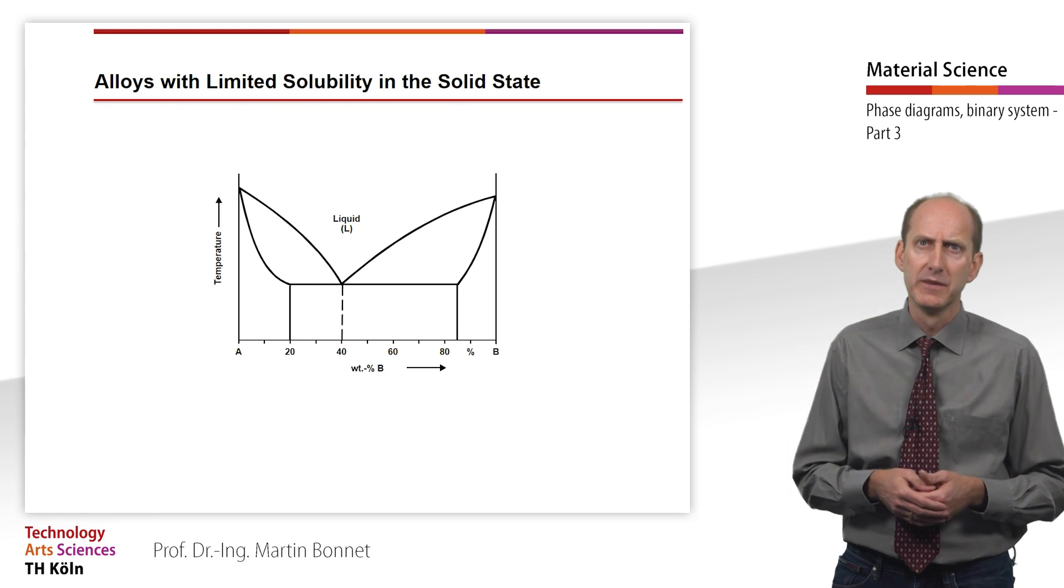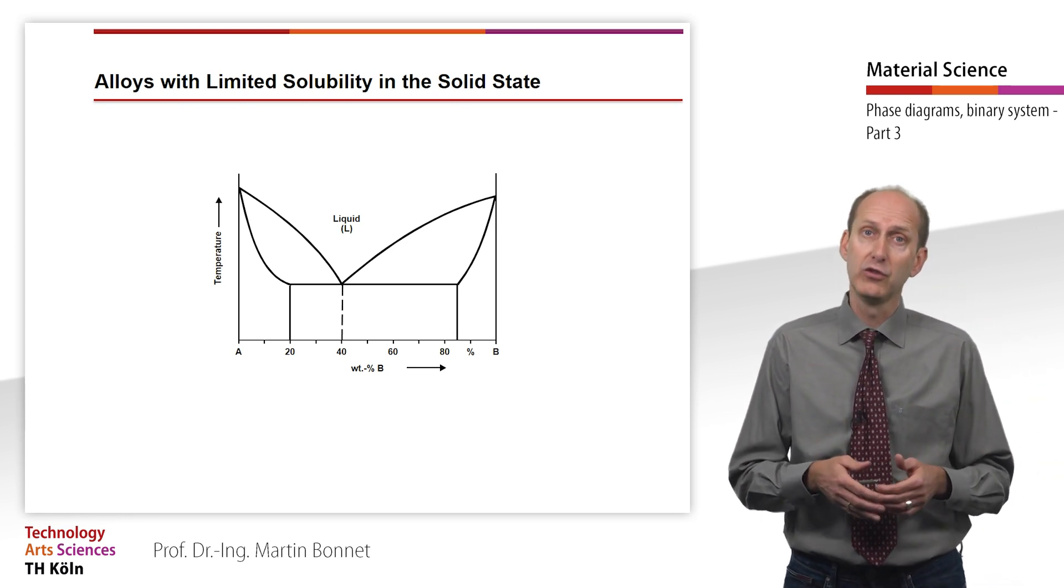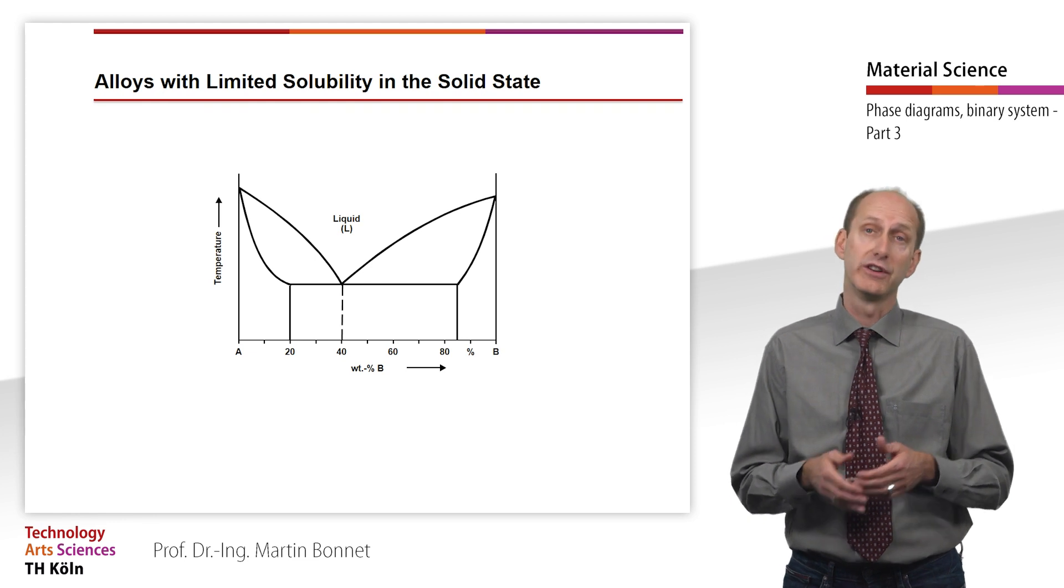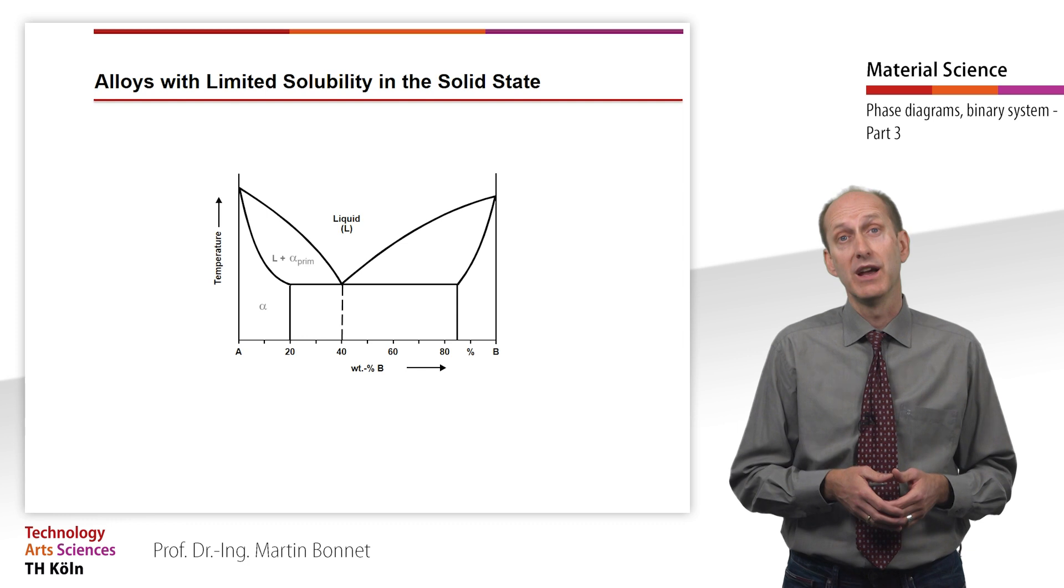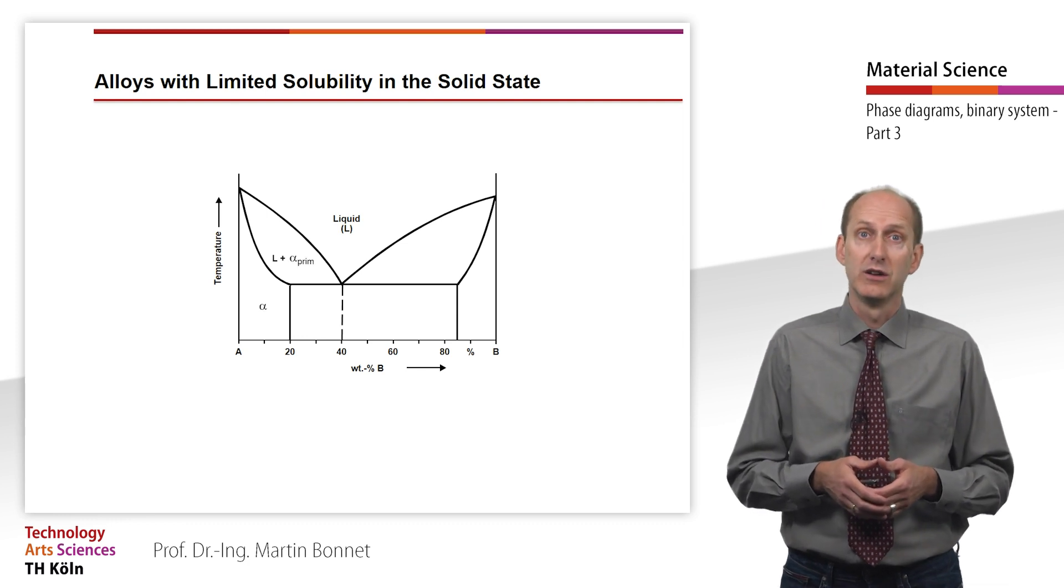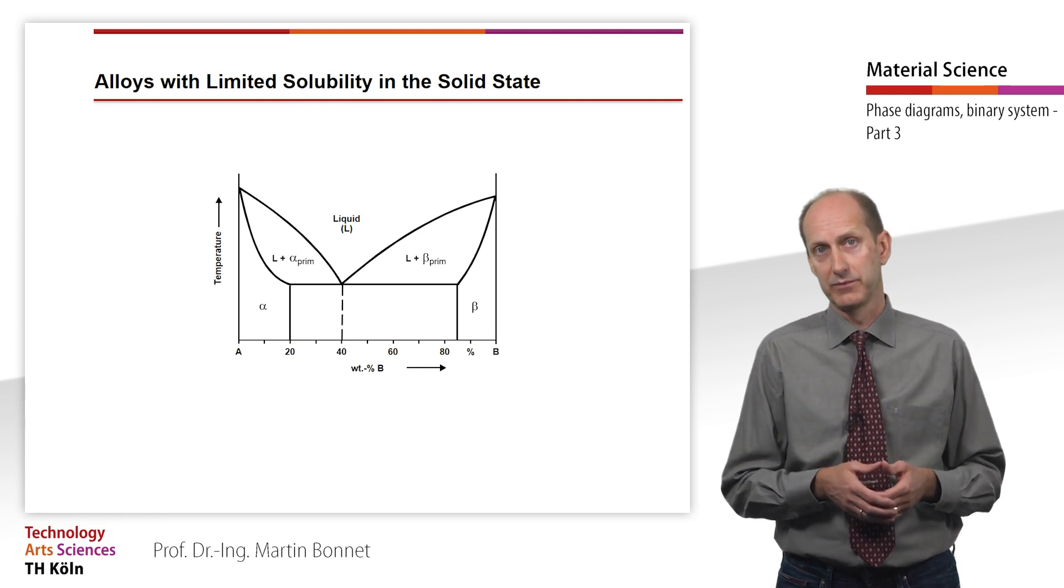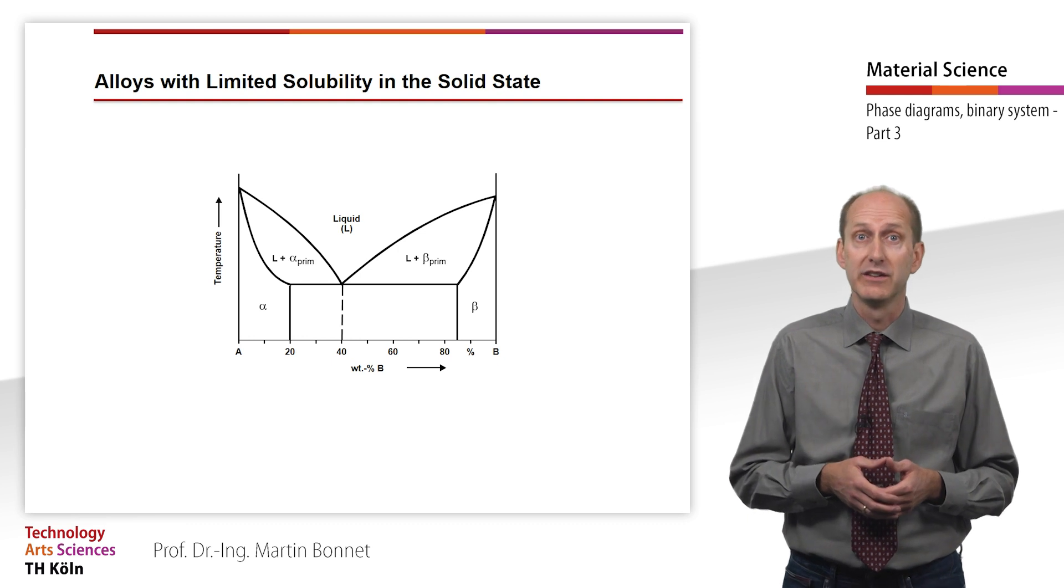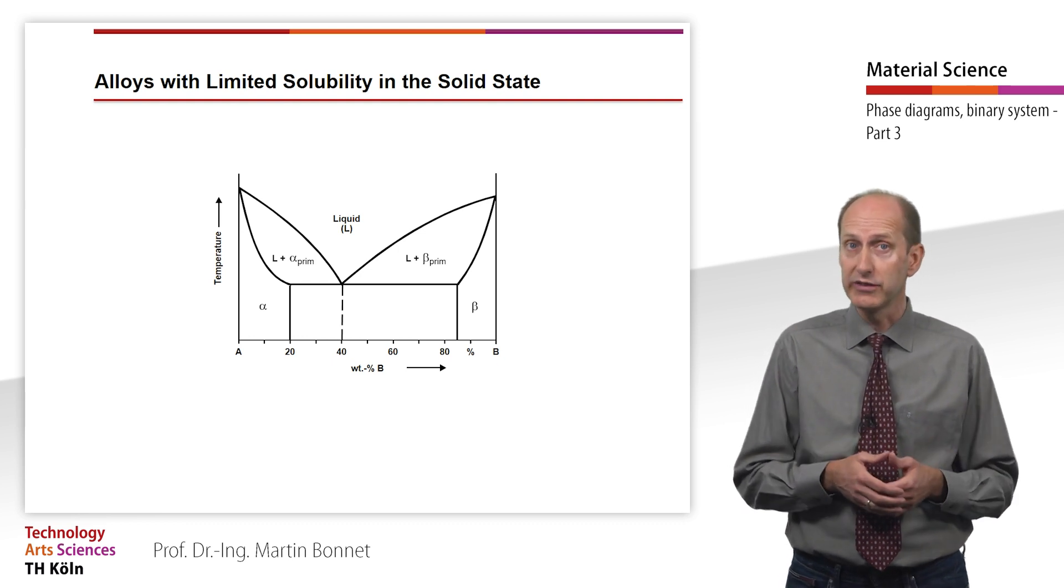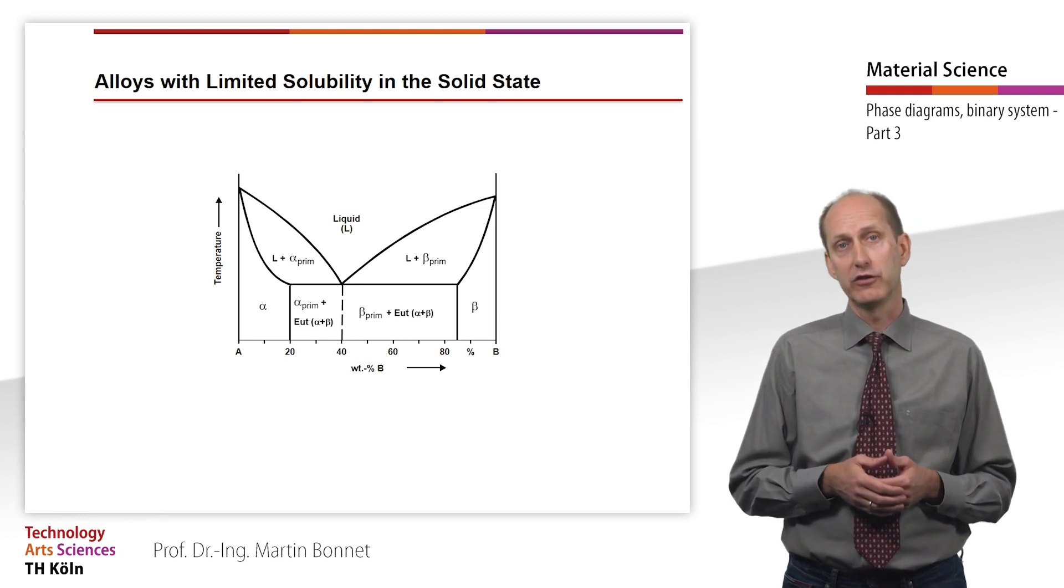As the solid solution in the two areas are not identical, the solid solution with a rich content of A is denoted with the Greek letter alpha, and the solid solution with a rich content of B is denoted with beta. Accordingly, the eutectic no longer consists of finely segregated A and B crystals, but of alpha and beta solid solutions.